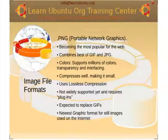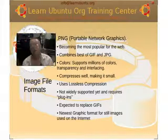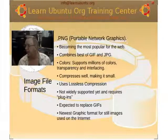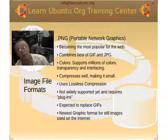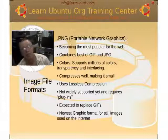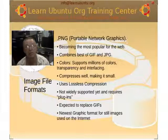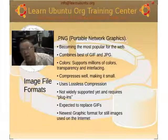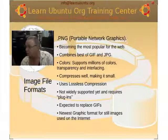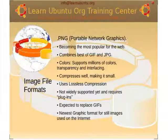PNG — Portable Network Graphics — is the more popular format and it's becoming more popular on the web. It combines some of the best features of GIF and JPEG in that it does support transparencies, it supports a lot more than 256 colors, and it compresses very well using lossless compression. The PNG, if not by now, ultimately will probably replace GIFs. That's what I use mostly.